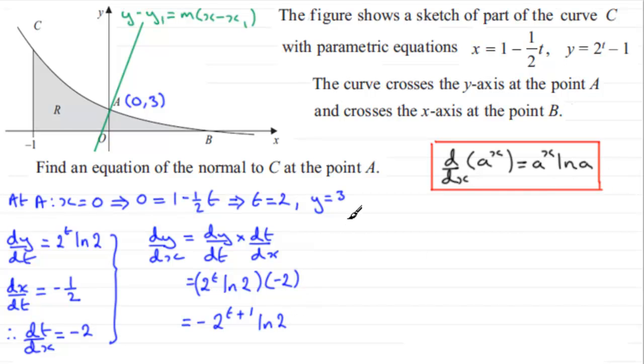We're now getting closer to being able to work out the equation of our normal. We need to get the gradient now of the normal, so we can find the gradient of the tangent at this point. We know that when t equals 2, at A, dy by dx is going to equal 2 to the power 2 plus 1, 2 to the power 3 which is 8. We've got a negative in front of this, so we're going to have minus 8 multiplied by the natural log of 2.